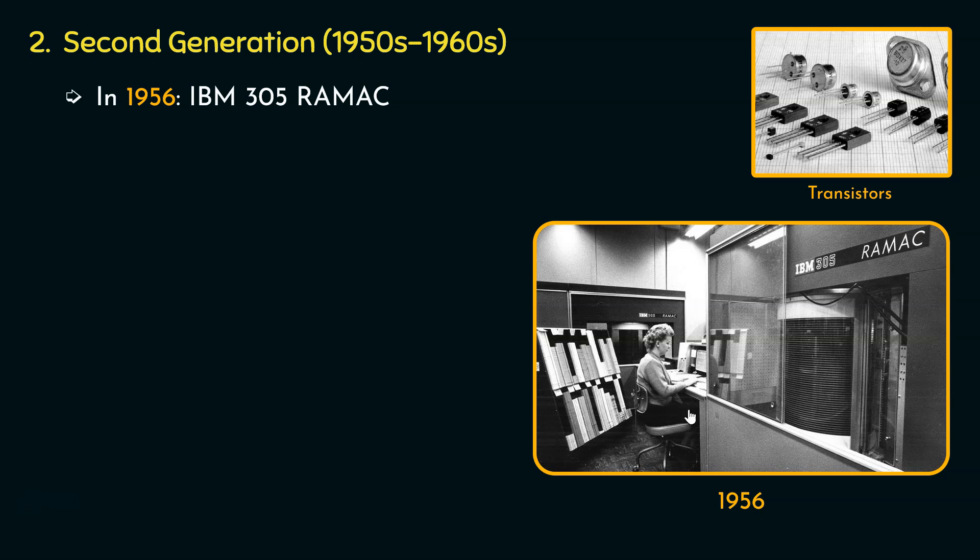It also featured a punch card reader to which, using punch cards, inputs used to be provided. Later, during 1959, COBOL—that is, Common Business Oriented Language—and FORTRAN—that is, Formula Translation—these two programming languages were developed. So these two are the most important milestones of the second generation of computers.